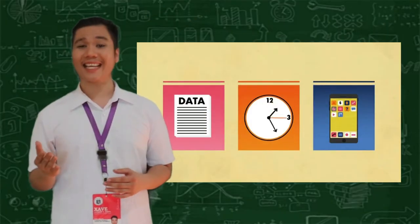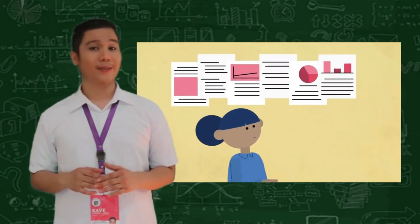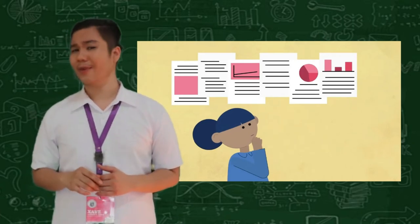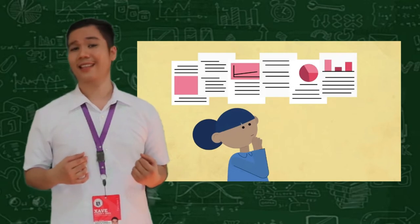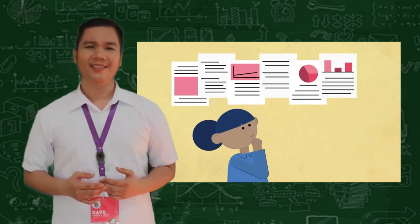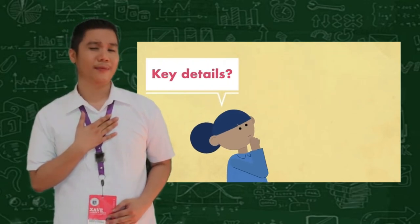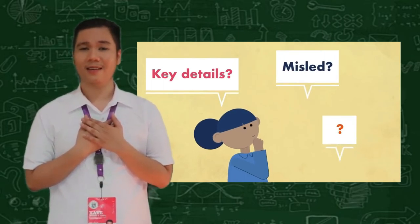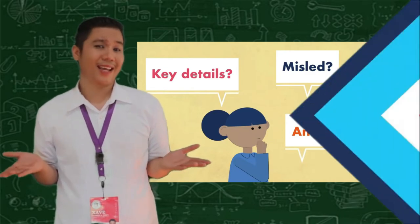The same technique used to solve brain teasers can also be applied to real world situations. When you're trying to figure something out, it's important to analyze the information that's available to you. Are there any key details I may be missing? Am I being misled by something? Could I be thinking about this in another way?